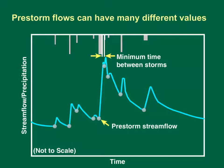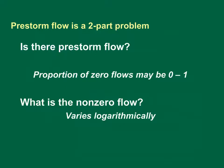Runoff events commonly are defined by the duration of the storm flow hydrograph. Pre-storm flows may include runoff from a previous storm because storm flow recession durations for many basins commonly are longer than one or more days. Estimating or simulating pre-storm flow is a two-part problem. The proportion of zero flows in the streamflow record sets the threshold for the risk of having a pre-storm flow equal to zero, and the non-zero flow volumes vary logarithmically.